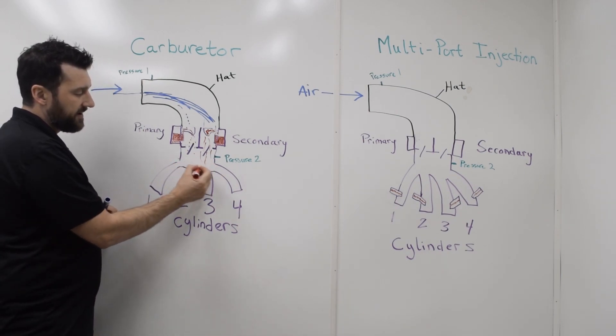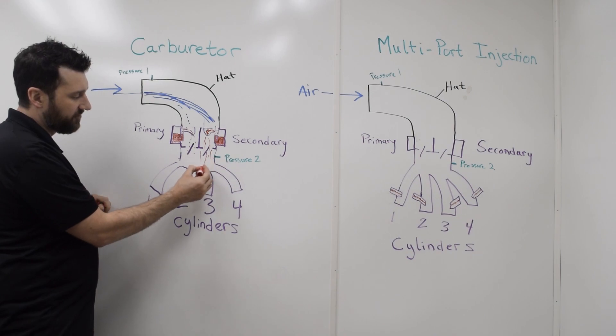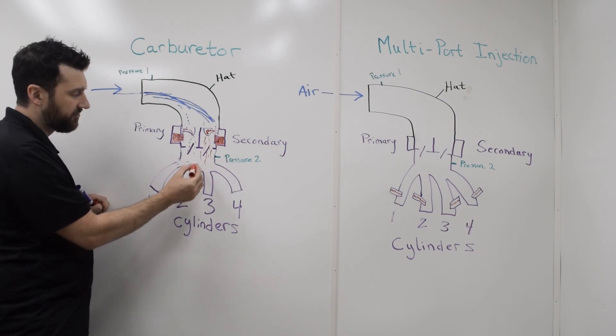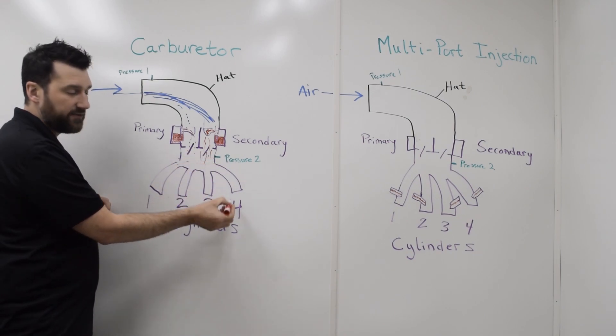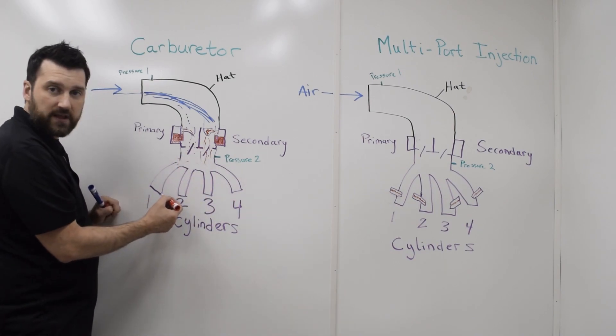Once the fuel and air gets into the intake plenum, fuel, just like air, it doesn't want to turn this corner and come over to the front cylinder. So what happens is, you get cylinders in the back that are rich and you get cylinders in the front that are lean.